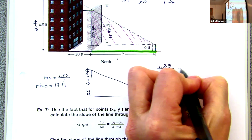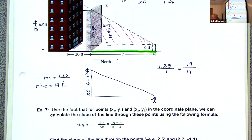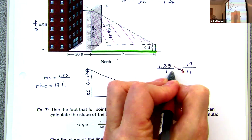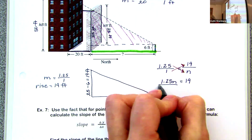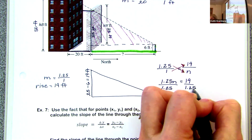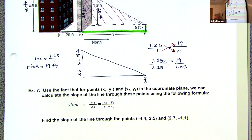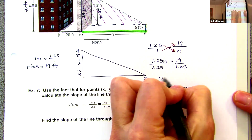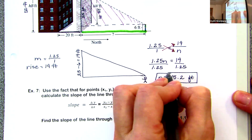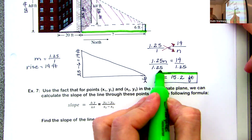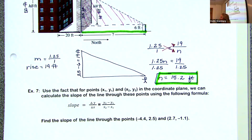Slope = 1.25/1 = 19/n. Cross multiply: 1.25n = 19. Divide both sides by 1.25. The directions say round to two decimal places. We get n = 15.2 feet. That green-highlighted distance — how far north of the wall the man must stand — is 15.2 feet.